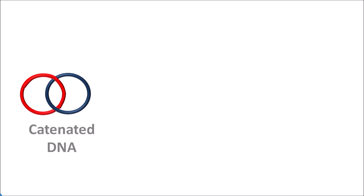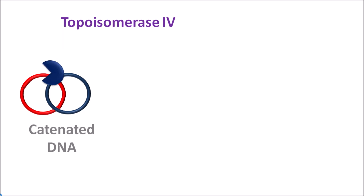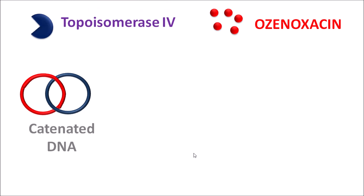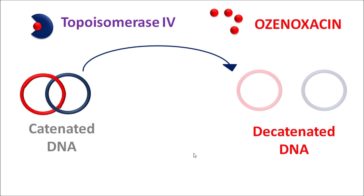Similarly, ozenoxacin can also block another enzyme, topoisomerase 4, which is responsible for cleaving the four strands in the replicating DNA. During DNA replication, catenated DNA is formed where two coils of DNA are interlinked, and these can be separated by topoisomerase 4. This enzyme produces a breaking of four strands within the DNA to release the catenated DNA, forming a nick so the coils can be released as decatenated DNA. Ozenoxacin inhibits this decatenation by binding to topoisomerase 4, inhibiting its activity. This again inhibits DNA replication and release of daughter DNA, thereby inhibiting bacterial growth.